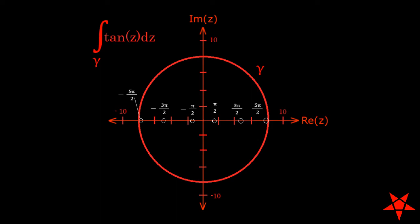Superimposing the graph of the path of integration upon that of the singularities in tangent of z shows six individual singularities whose residues contribute to the value of the integral. All other singularities are outside of the closed loop and do not contribute to our answer.